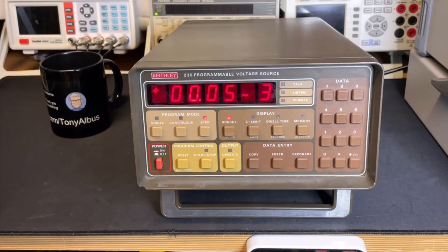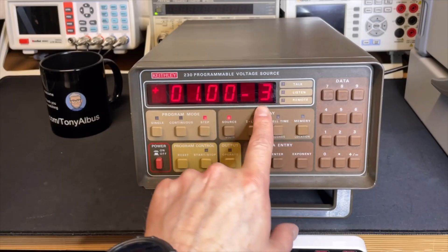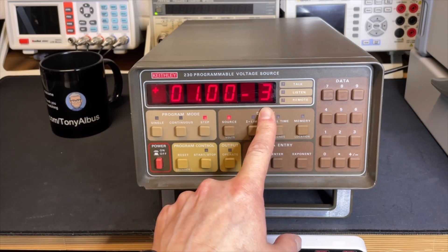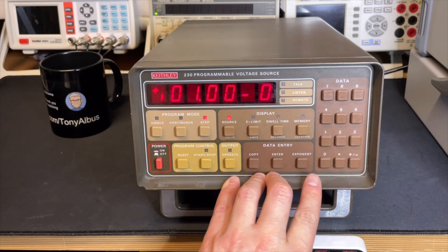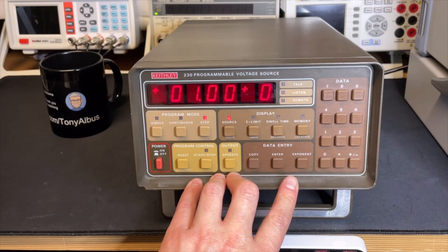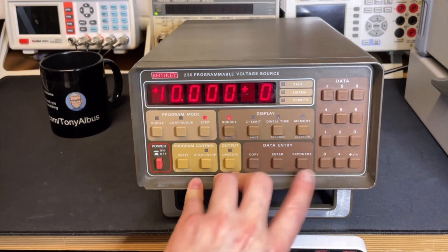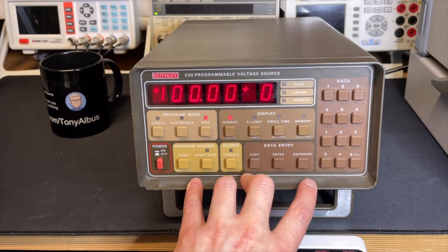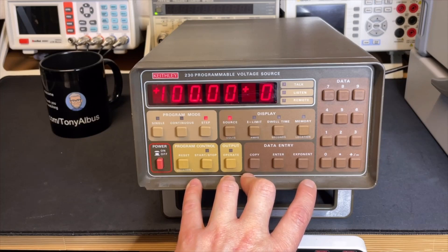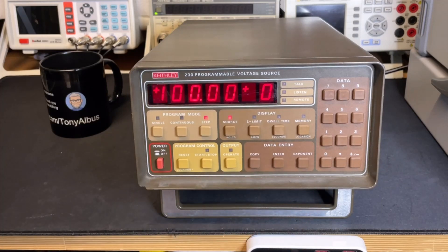So here we have it from the front. This would be one millivolt because it's minus three. And if we want to go to one volt, that would be this one volt, 10 volts, 100 volts. So this way you can set all your voltages that you would like.